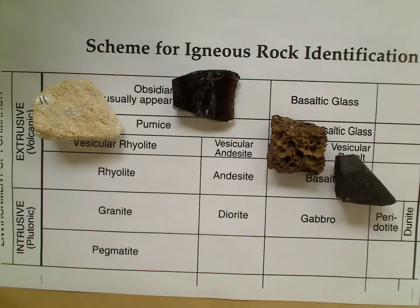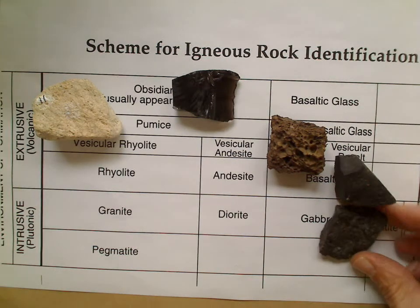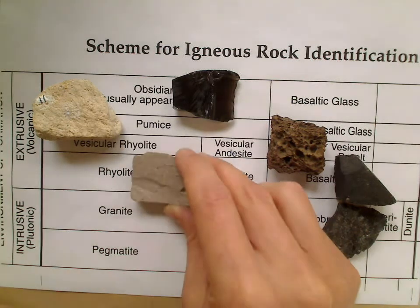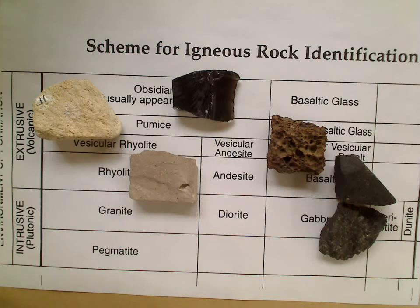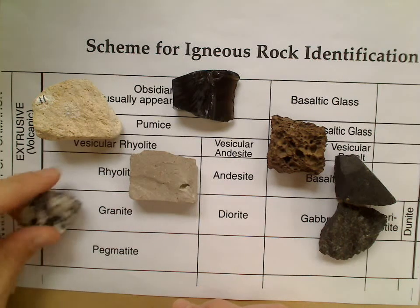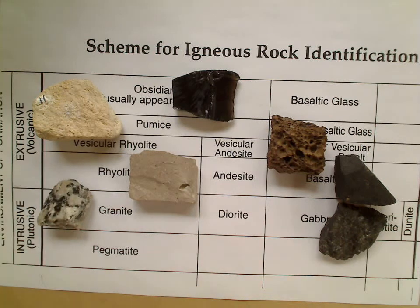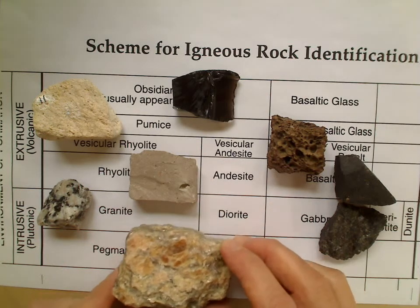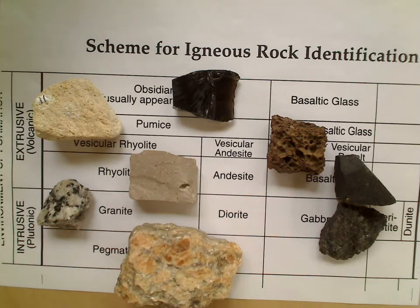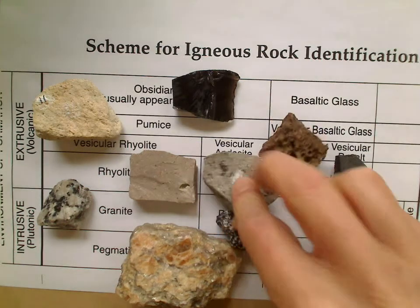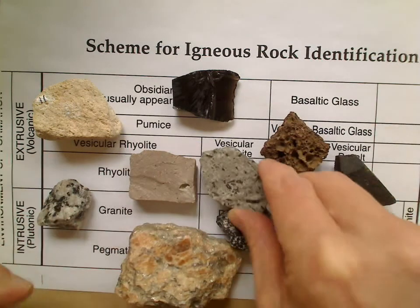That's your basalt, gabbro, and rhyolite right there. I'm actually going to place them to the side so you can see the names — I think that's going to help. My pegmatite — I have quite a large piece of pegmatite, I'm going to put that right there. Diorite there, and andesite right there.